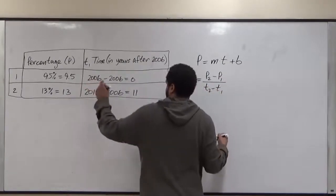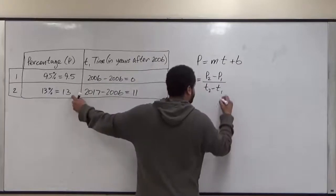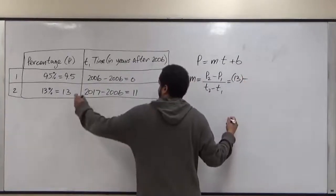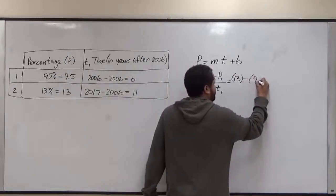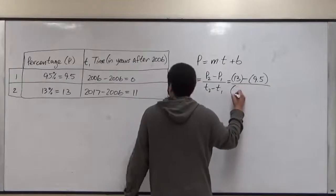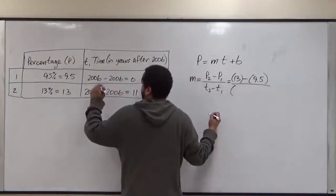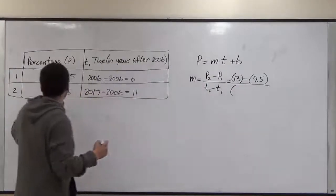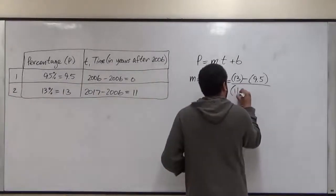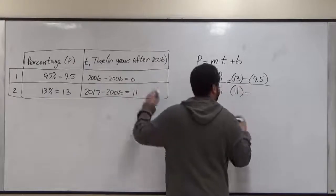We're going to have P2 take away P1 divided by T2 minus T1. Our P2 is 13, take away our P1, which is 9.5. And on the bottom we're going to have T2, which is 11.